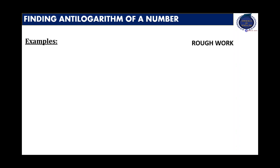When we consider the anti-logarithm of a number, first we need to write the multiplier of 10. For example, anti-log of 3.0723 — here 3 is representing the characteristic, and it determines the position of the decimal point. Whatever may be the answer we get, we have to multiply it with a power of 10, where the power equals the characteristic. So therefore, it is 10 raised to 3.